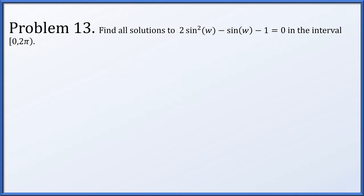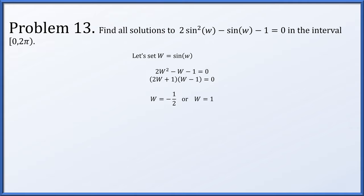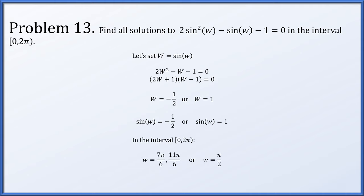In problem 13, we solve 2 sine squared w minus sine of w minus 1 equals 0 on [0, 2π). Setting W equal to sine of w gives the quadratic 2W squared minus W minus 1 equals 0, which factors to give W equals minus one half or 1. So sine of w equals minus one half or 1. In [0, 2π), sine equals minus one half at 7 pi over 6 and 11 pi over 6, and sine equals 1 at pi over 2. Our three solutions are pi over 2, 7 pi over 6, and 11 pi over 6.